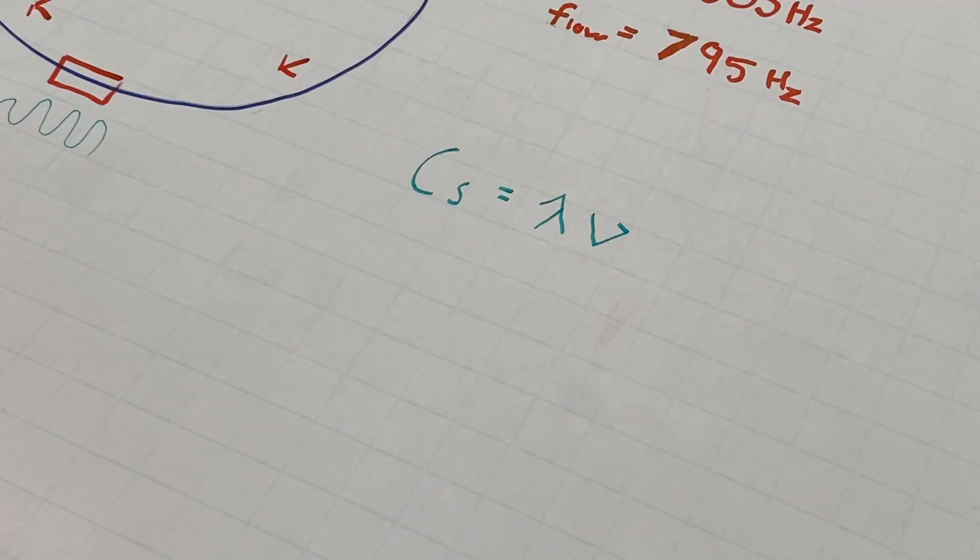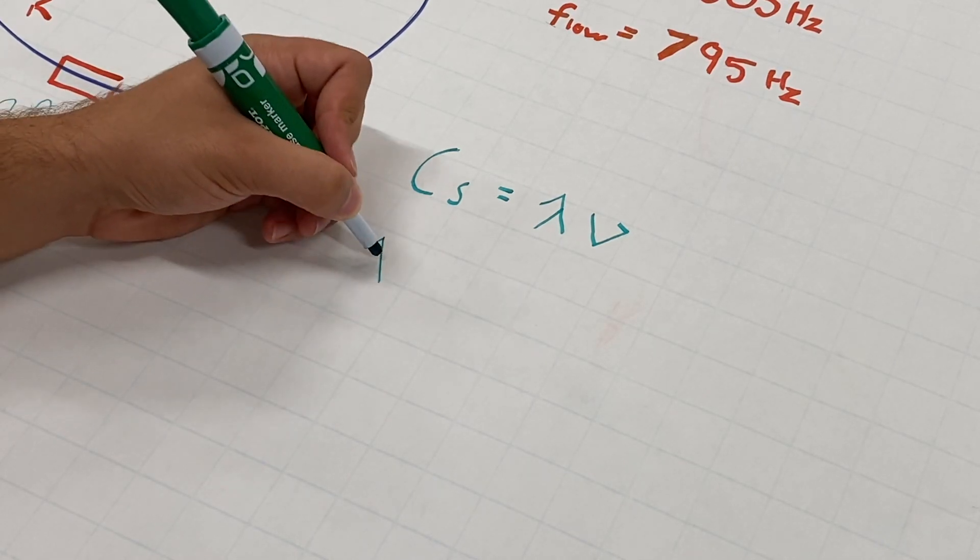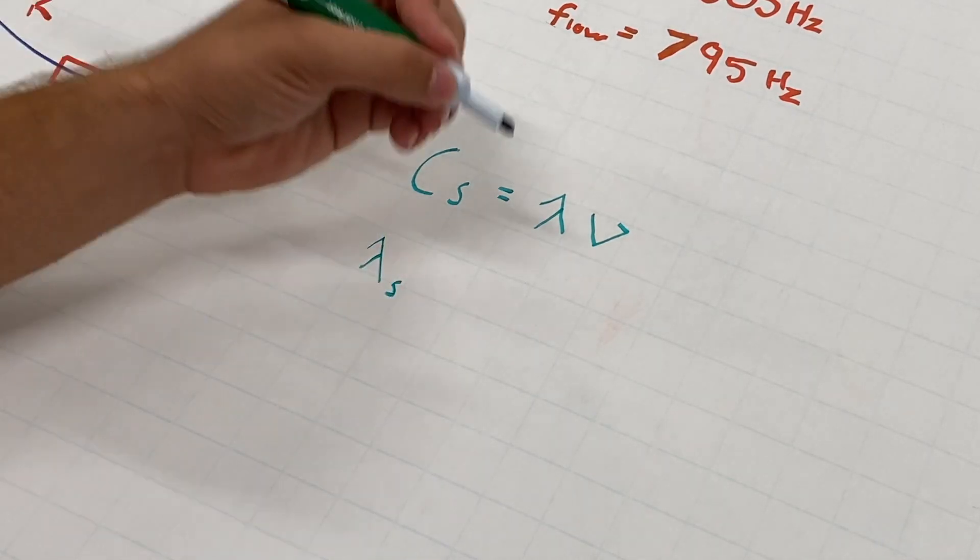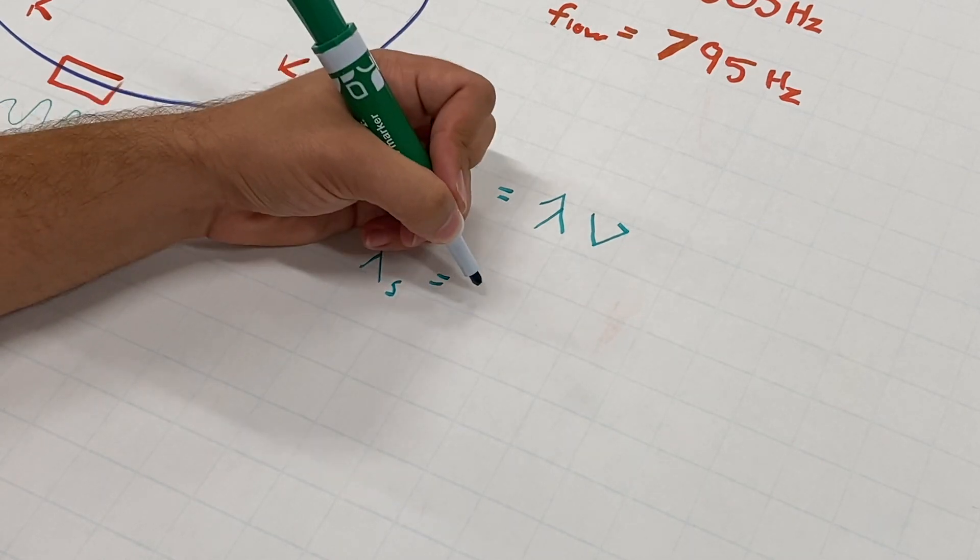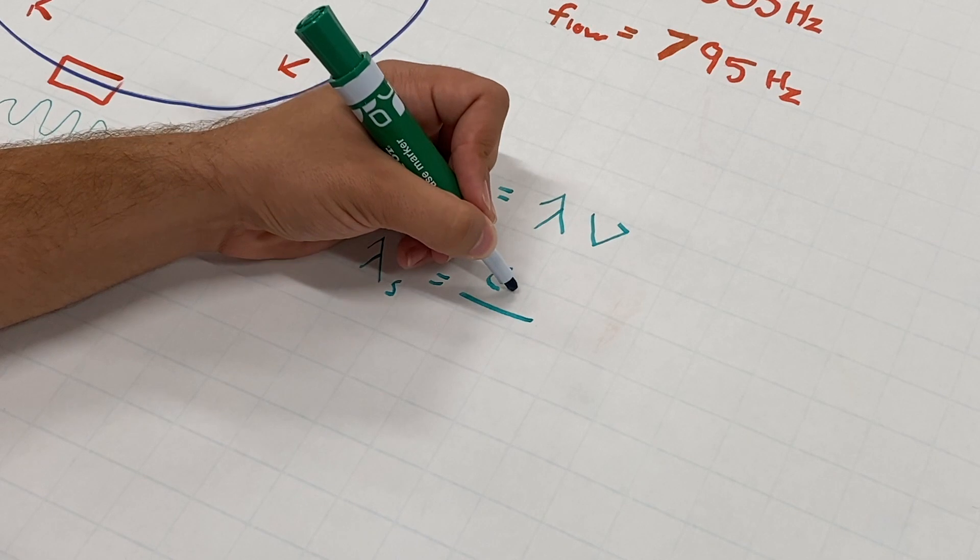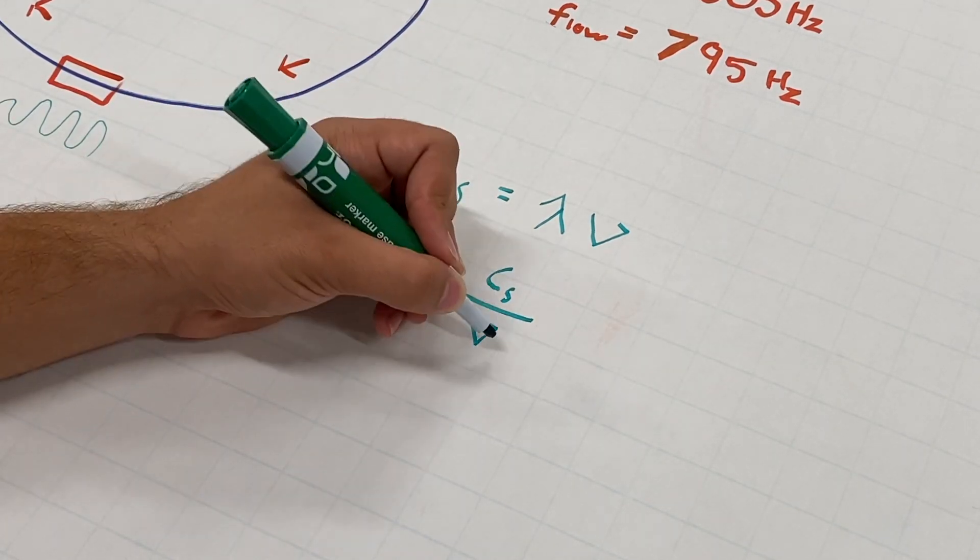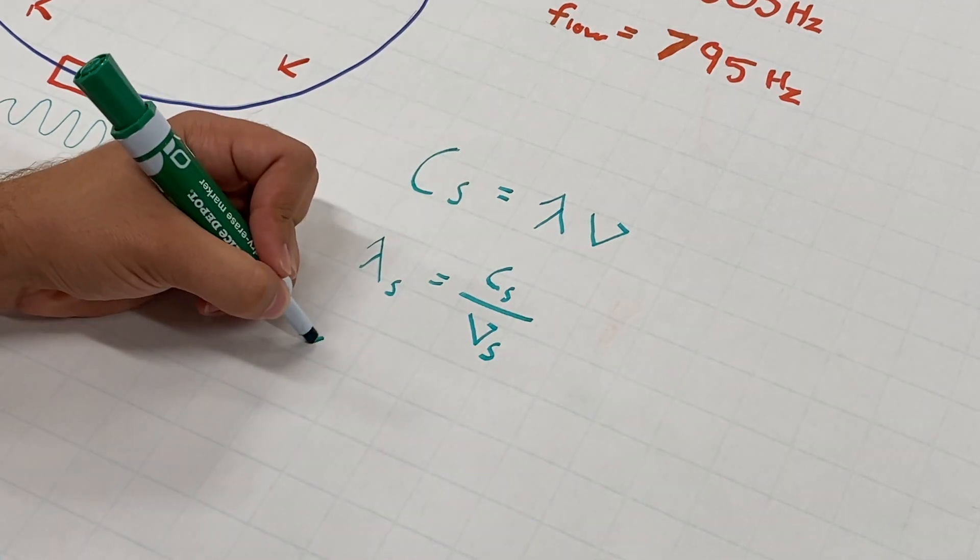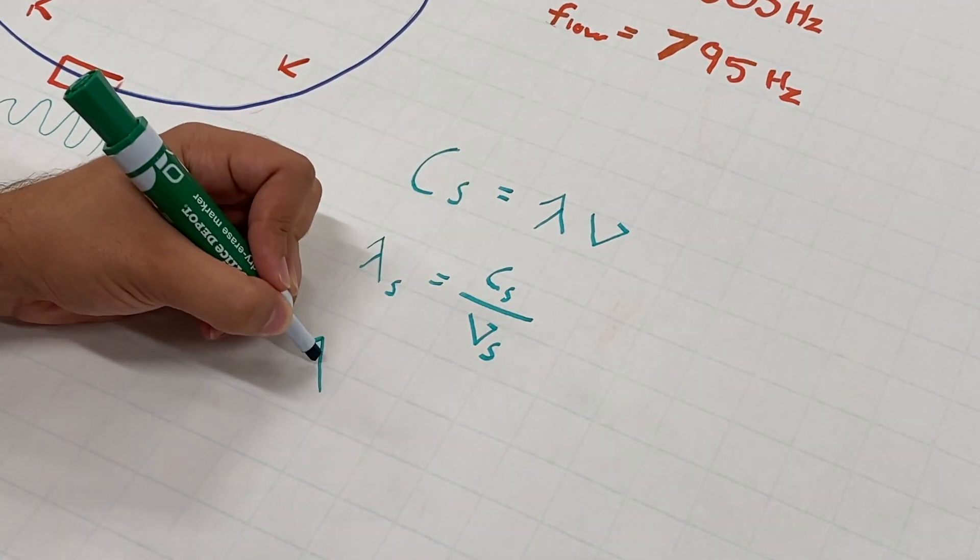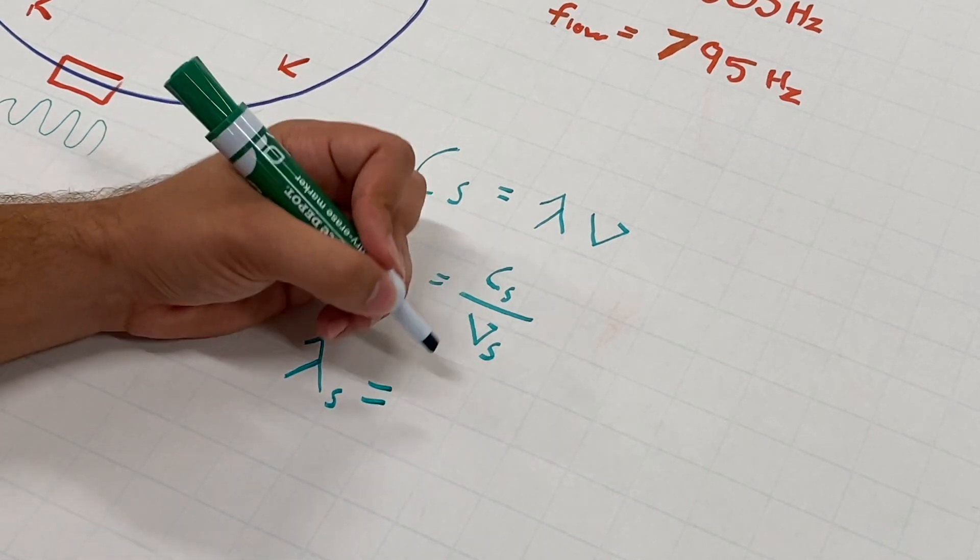We can use this information to rewrite the equation in order to calculate wavelength. We'll be using lambda s for source equals speed of sound divided by nu s for source. What this means is now we can plug in the values we found and find the wavelength.